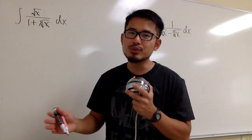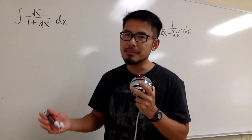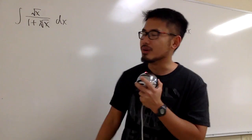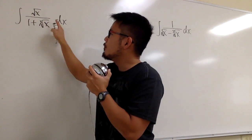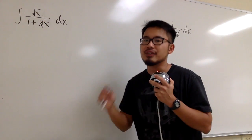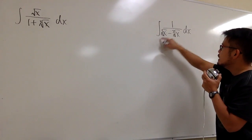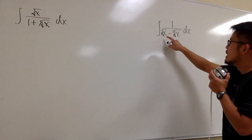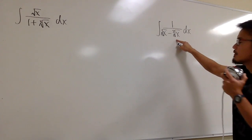Let's see how to deal with the square root and the cube root together at the same time in an integral. The first one is the integral of square root of x over 1 plus the cube root of x. And the second one is the integral of 1 over square root of x minus the cube root of x.